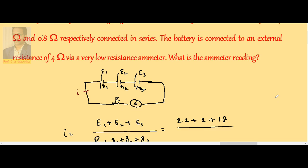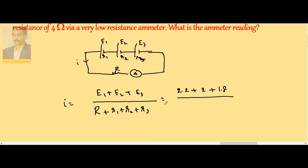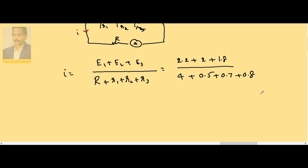Now if I simplify this, numerator is 6, denominator: 0.5 plus 0.7 is 1.2, plus 0.8 is 2, plus 4 is 6. Therefore current in the circuit is 1 ampere, so reading in the ammeter is also 1 ampere.